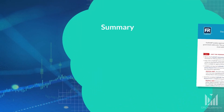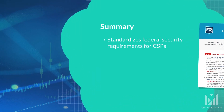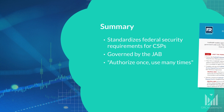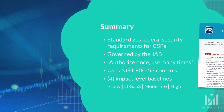Let's summarize. FedRAMP is a federal program which standardizes federal security requirements for cloud service providers. The Joint Authorization Board is the primary governance and decision-making body. A cloud service provider's FedRAMP ATO is meant to be reused by multiple agencies. FedRAMP leverages the NIST 853 controls. There are four impact levels: low impact, low impact SaaS, moderate impact, and high impact. DFAR 7012 requires cloud systems that contain CUI to meet the security requirements of the FedRAMP moderate baseline. Demonstrating equivalency can be difficult, so the best case in most situations is to simply use a cloud system that is FedRAMP moderate authorized.